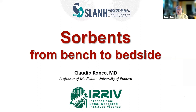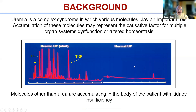Sorbents represent, in my view, the new frontier. And for this reason, I think this is a very important topic. Uremia and other critical diseases are called retention syndromes because there is accumulation of molecules that can be identified using mass spectrometry. And these molecules are not only urea, showing that these retention syndromes may be caused by different solutes that affect different pathways in metabolism.